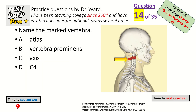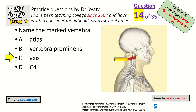Name the marked vertebra — it's the second vertebra from the top in the neck. Axis, also known as C2 vertebra.